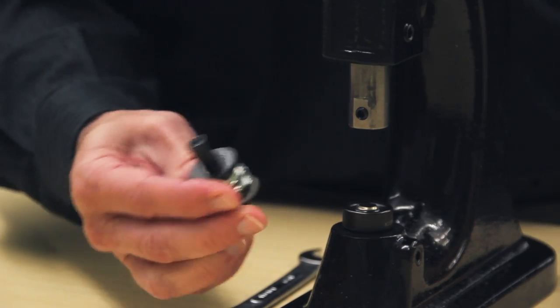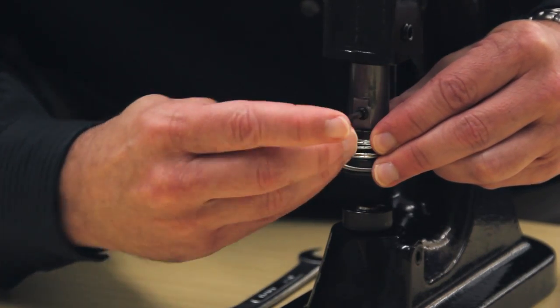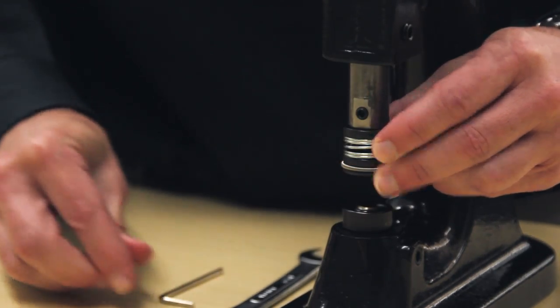Next, insert the upper grommet die into the top shank and tighten the set screw. The upper die will be larger and allows a grommet to snap into place.